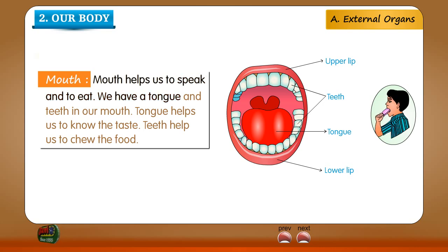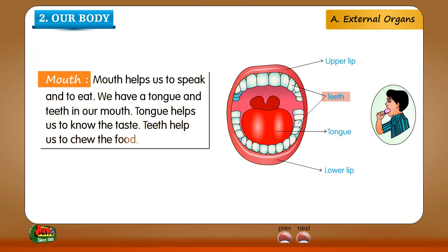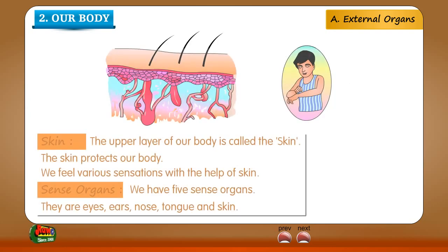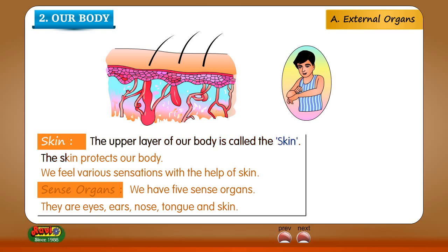We have a tongue and teeth in our mouth. Tongue helps us to know the taste. Teeth help us to chew the food. Hair: the strands on our head are collectively called hair. Skin: the upper layer of our body is called the skin. The skin protects our body. We feel various sensations with the help of skin.